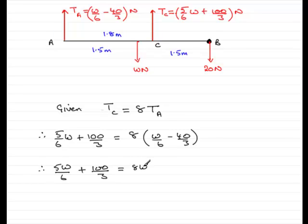we've got 8W over 6. And 8 times 40 over 3 is 320 over 3. Now if I multiply through by 6, we're going to get 5W for this term. Multiply this by 6, 3 into 6 goes 2. So 100 times 2 is 200.